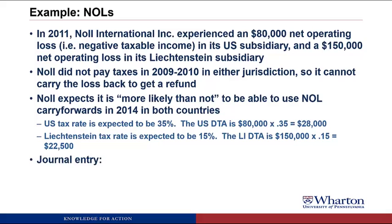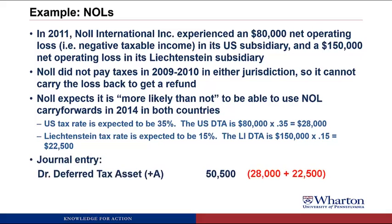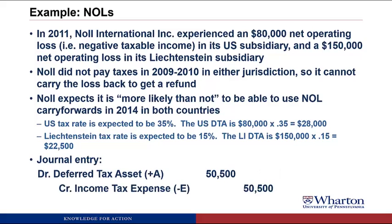The journal entry: debit deferred tax asset $50,500 (combining both countries' deferred tax assets representing future expected tax savings), and credit income tax expense $50,500. There's no cash involved and it doesn't affect income tax payable. The only place to recognize this is as a negative expense — an unexpected benefit of having these losses is the expectation of future tax savings.